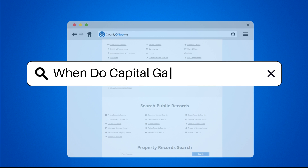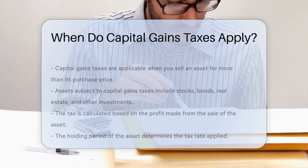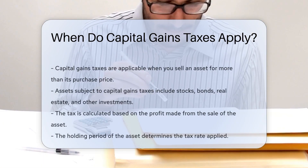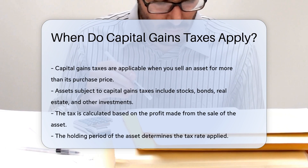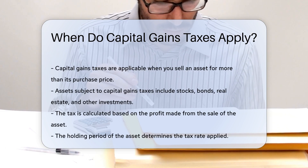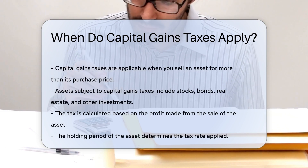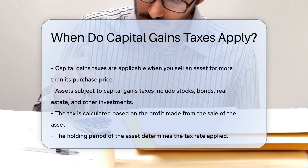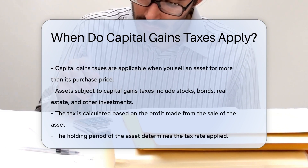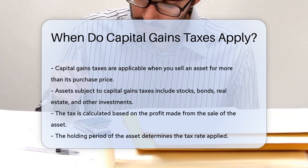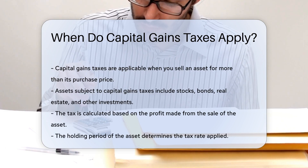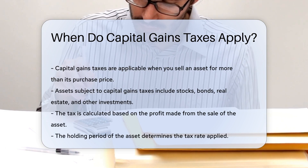When do capital gains taxes apply? Capital gains taxes apply when you sell an asset for more than you paid for it. This includes stocks, bonds, real estate, and other investments. The tax is calculated on the profit you make from the sale.